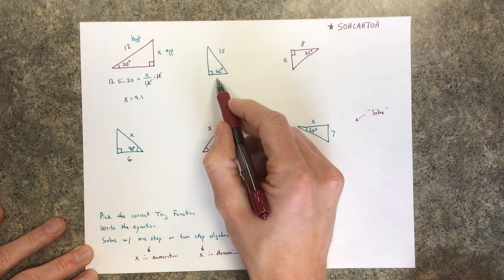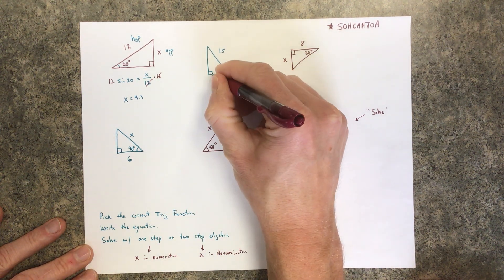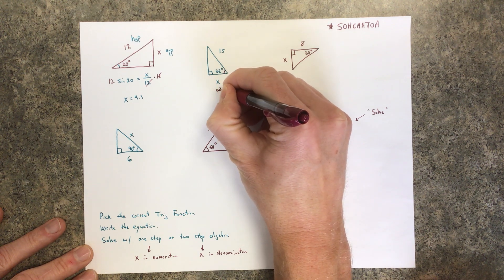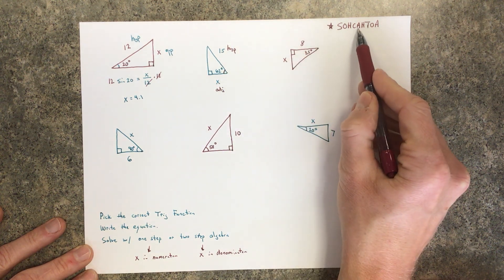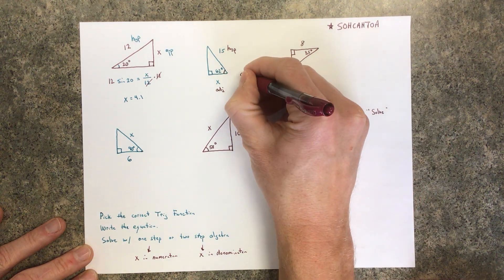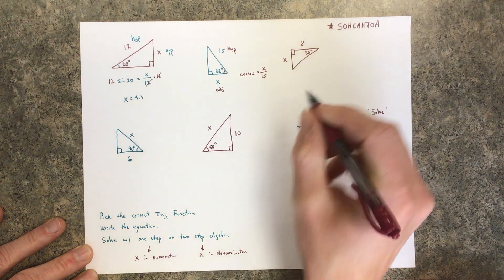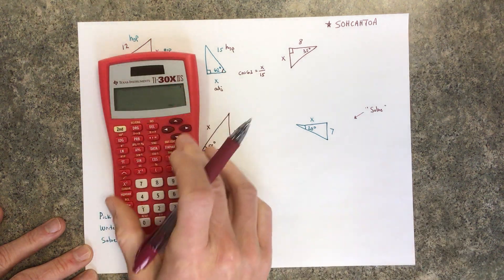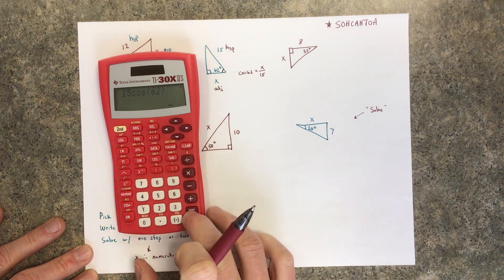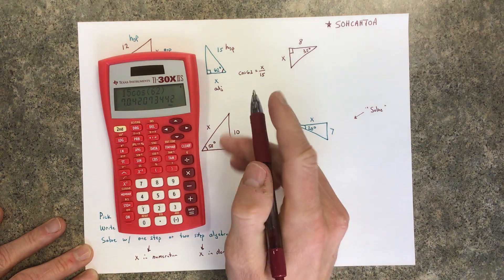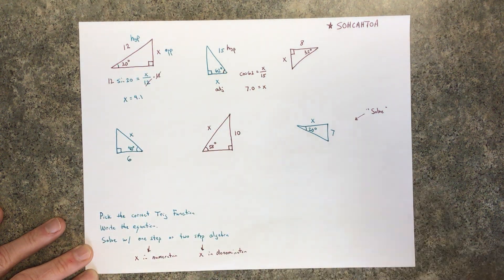Problem two: The hypotenuse is 15 and the angle is 62 degrees. X is next to the angle, so it's the adjacent side. The trig function relating adjacent to hypotenuse is cosine. So: cosine of 62 = x/15. Multiply both sides by 15: x = 15 × cosine(62). That gives 7.04, which rounds to 7. So x equals 7.